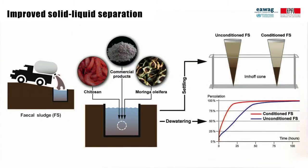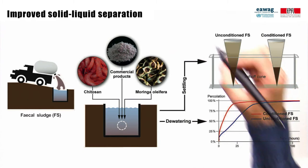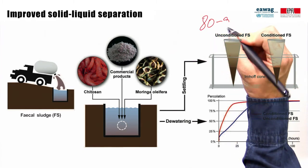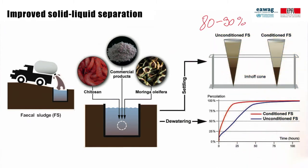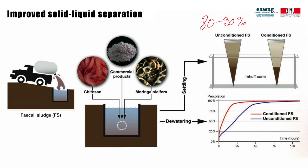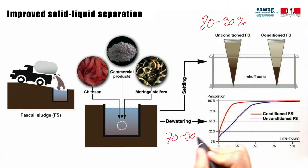In this study, conditioning of septic tank fecal sludge could reduce the suspended solids in the effluent of settling thickening technologies by 80 to 90 percent. The dewatering rate on drying beds, for example, could be improved by 70 to 90 percent. This could reduce the dewatering time of sludge on drying beds by 60 to 95 percent.